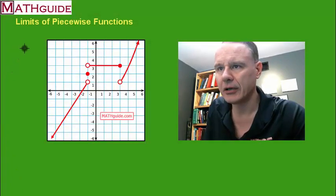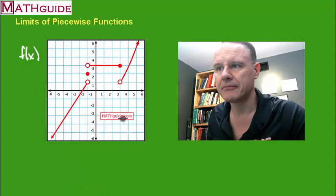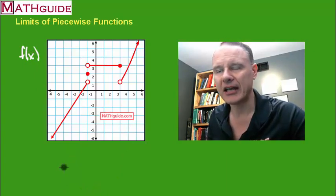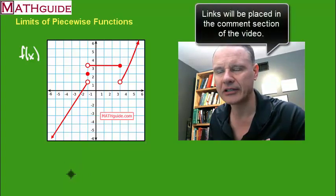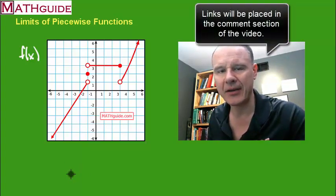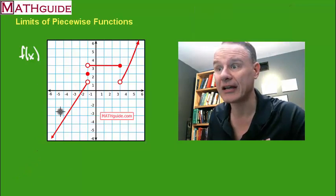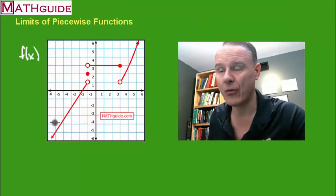In this curve — the curve has been drawn for us. MathGuide has some videos about how to graph piecewise functions; I'm going to put all relevant material in the comments section of the video. Here we've got f of x and it is definitely graphed for us.